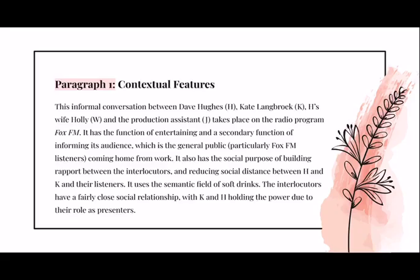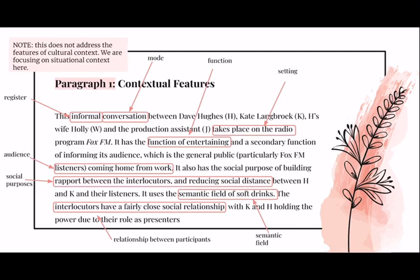Please pause here and read through the sample opening paragraph on contextual features, based on the text you've just read. The annotated version on the following slide points out where all the features of situational context appear in that paragraph — register, audience, semantic field, and so on. Use this as a checkpoint: go through your own practice pieces and highlight where you've written about each of those elements to make sure you can tick them all off.